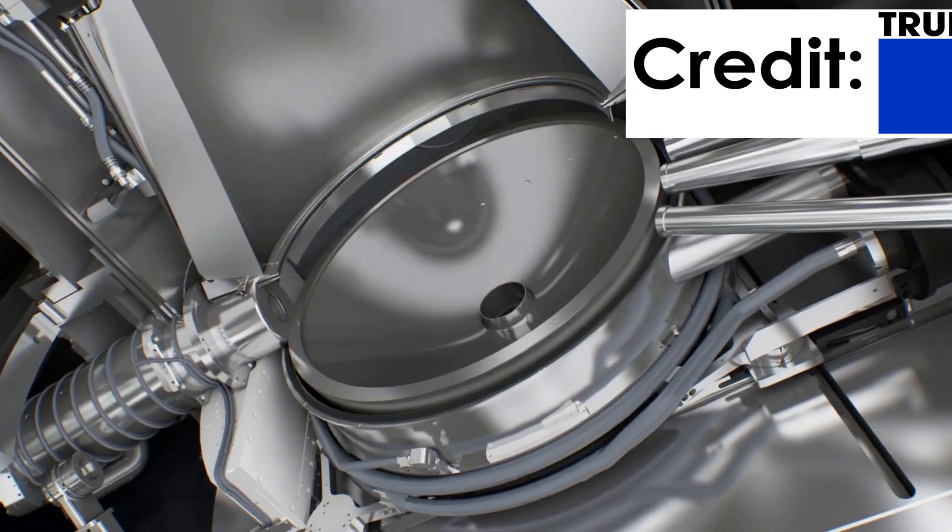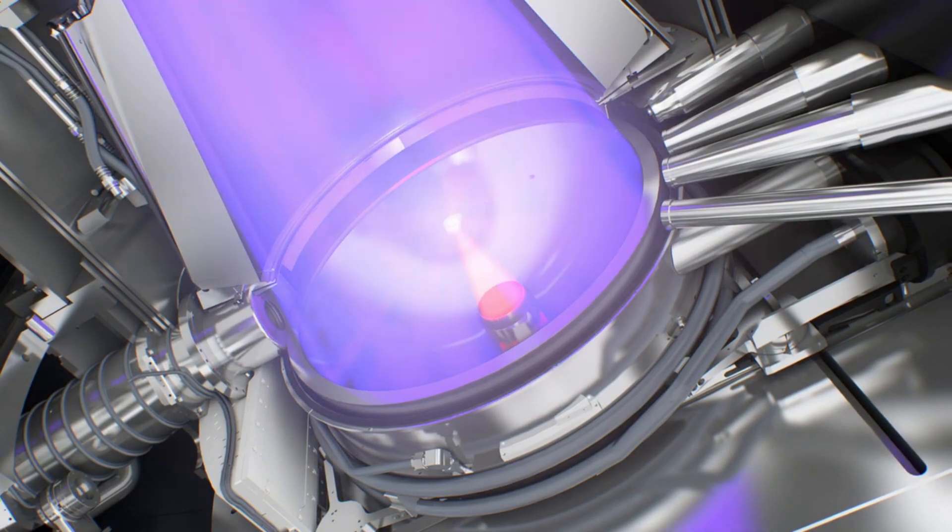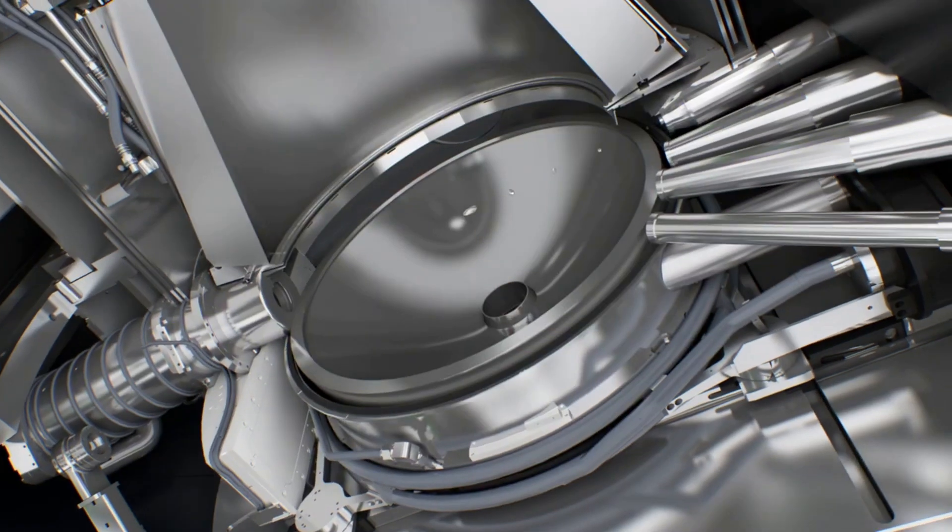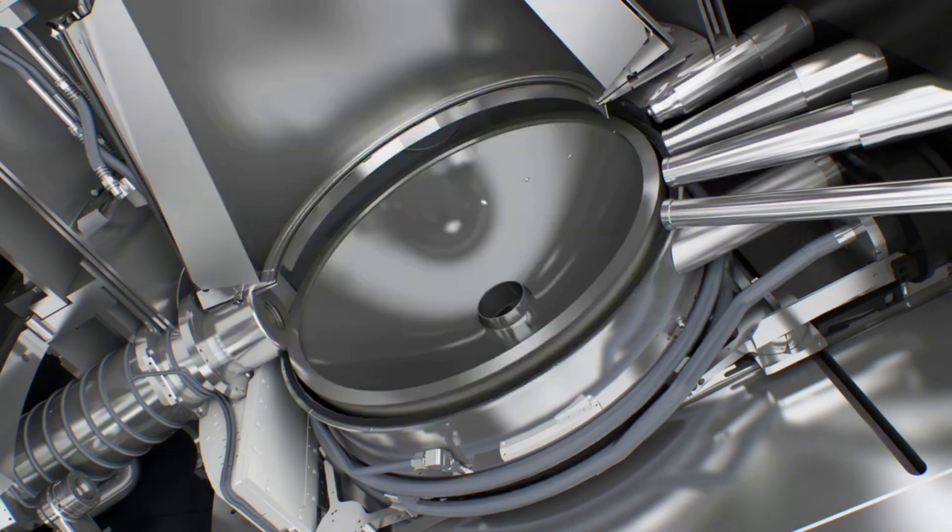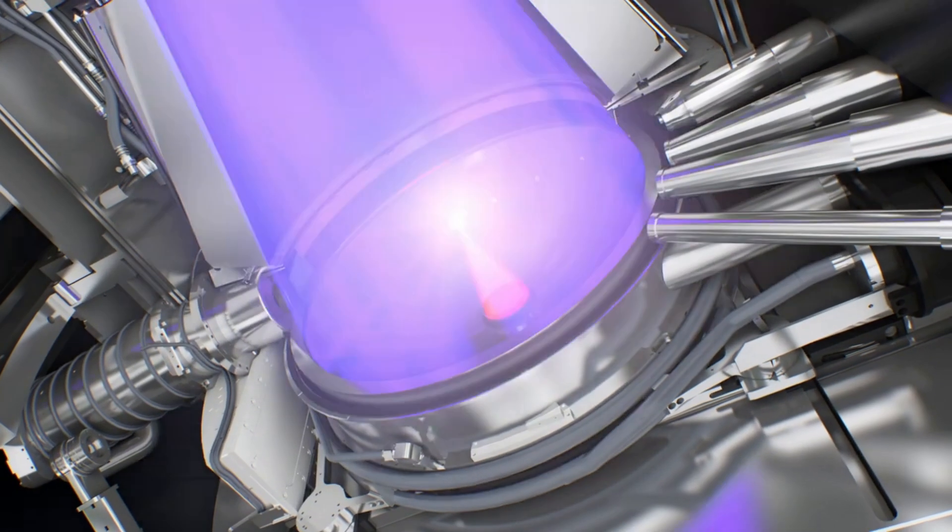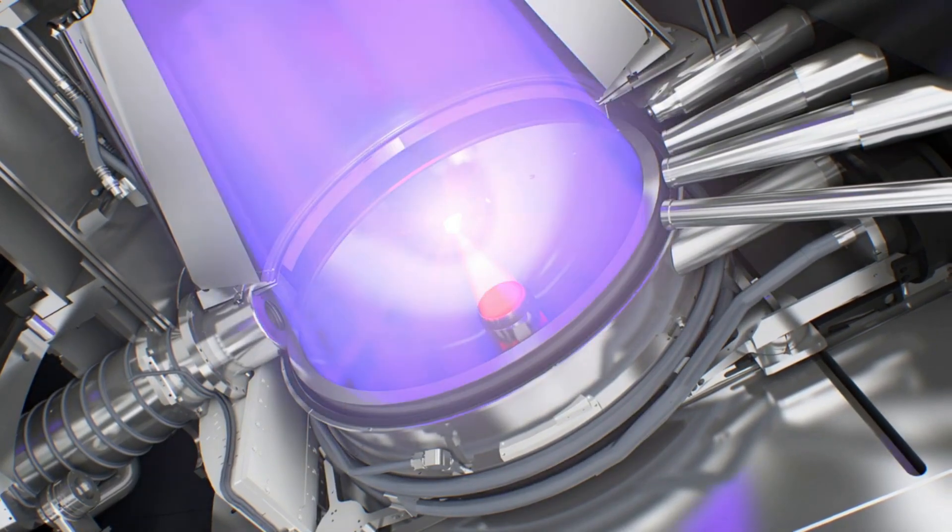To solve this problem, engineers at Trumpf created a device that shoots droplets of molten tin across an opening. Each droplet is shot once with a low power laser to flatten it into a pancake shape to increase the surface area for efficiency, and then again with a high power laser to turn it into plasma and create the EUV light. In order to produce enough light, this process is repeated 50,000 times a second.